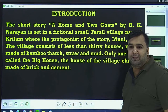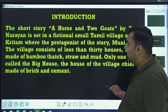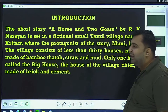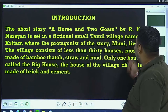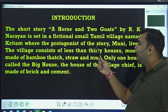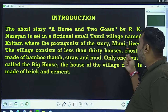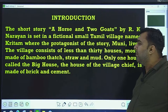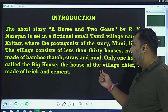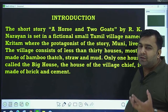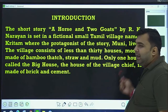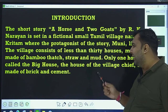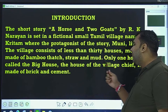This story is a short story — A House and Two Goats by R.K. Narayan — set in a fictional small Tamil village named Kritam. The protagonist, means the main character of the story, is Muni. This story is centered on the main character Muni, who lives in the village.